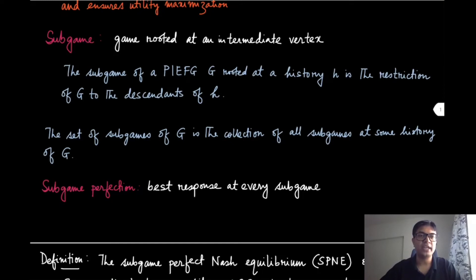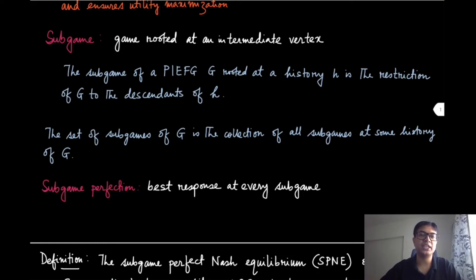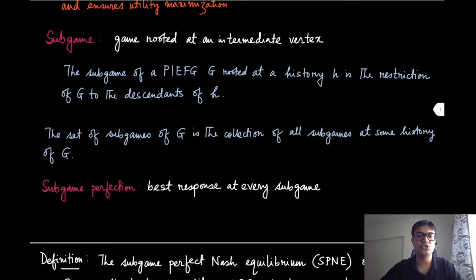Our equilibrium concept should look at every subgame and essentially try to find out an equilibrium that is appropriate for that subgame. That is the notion of subgame perfection. The subgame perfection idea is essentially talking about the best response of the player who is at that subgame, and this should hold for every subgame of this game.